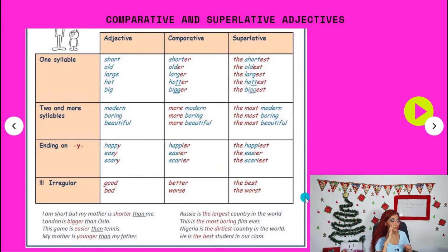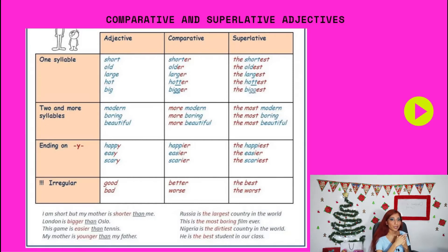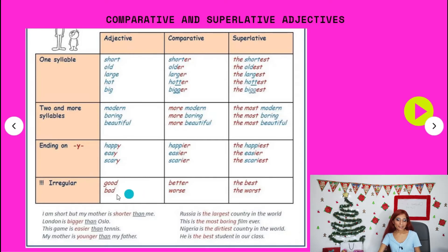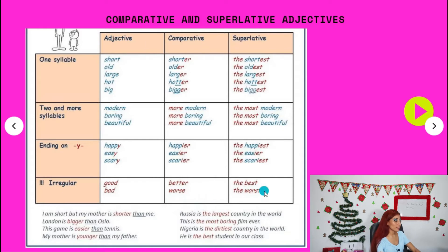Now, in English we also have irregular adjectives that don't follow these rules. For example, 'good' becomes 'better' in the comparative and 'the best' in the superlative. 'Bad' becomes 'worse' in the comparative and 'the worst' in the superlative.